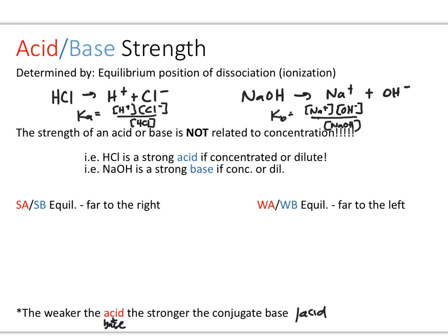The farther to the right your equilibrium lies with respect to these ionization processes, the stronger your acid or base is going to be. Something that needs to be noted is that the strength of your acid or base is not related to concentration — it doesn't matter what the molarity of your solution for that acid or base actually is. All that matters is the relative equilibrium position that will be achieved. HCl and sodium hydroxide will both be strong acids and strong bases, respectively, regardless of whether they're concentrated or dilute.